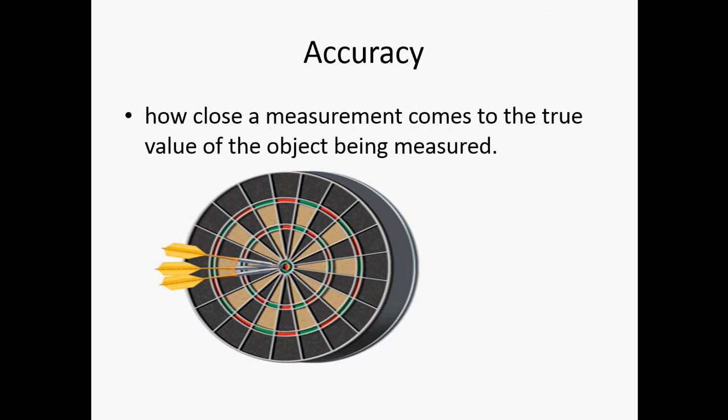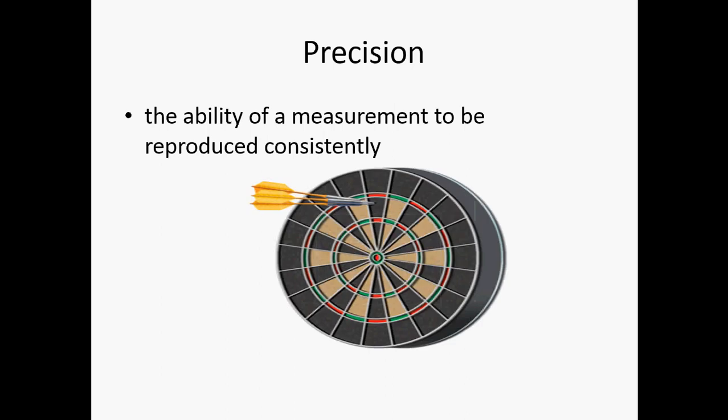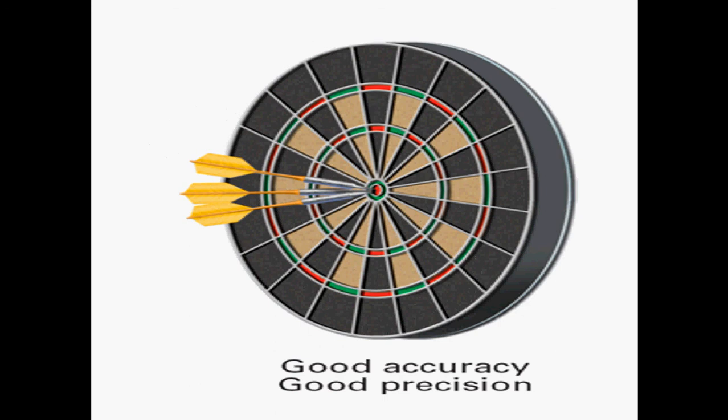Precision is the ability of a measurement to be reproduced consistently. For example, you're playing darts and all your darts go in the same spot. You have good accuracy and good precision.